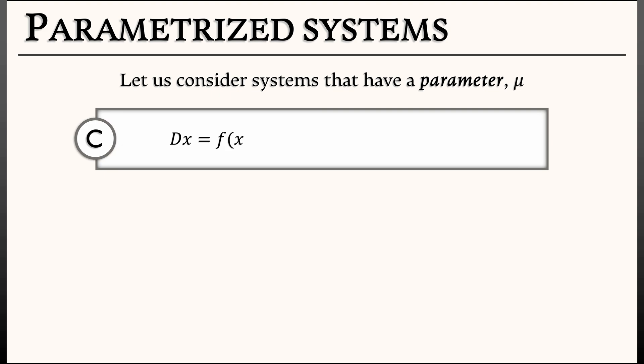So in continuous time, this would look something like dx/dt = f(x, μ). That is, dx/dt depends on both x and the parameter μ. In discrete time, we might write this as x̄ = f(x, μ). Now, f is multivariate, but if we think about how μ changes with time, it doesn't.